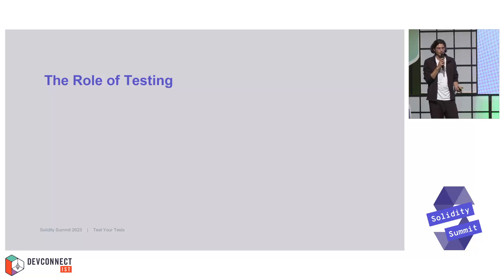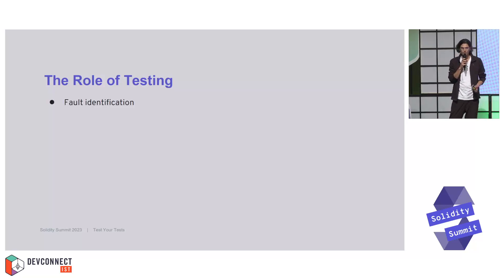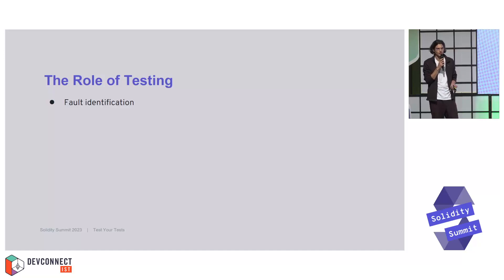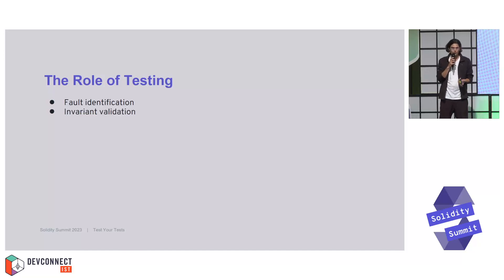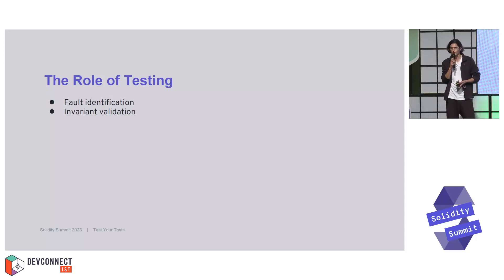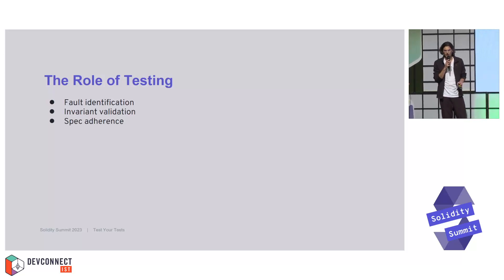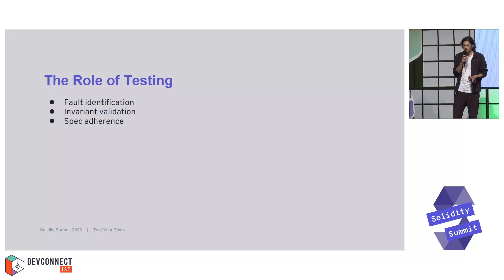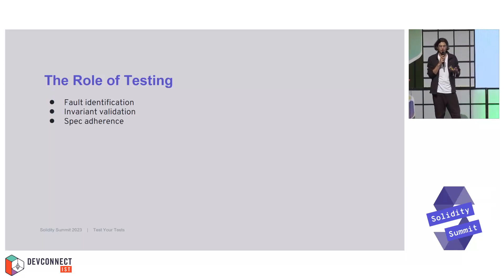Let's talk about the role of testing. It's pretty clear in blockchain why we test — we have millions at risk. We want to identify any kind of faults, any unexpected behavior that could be abused and exploited. With more advanced testing, we can also validate invariants of our system, making sure certain properties hold within our protocol for any stateful fuzz transactions we can send.